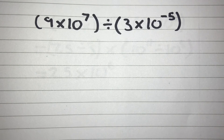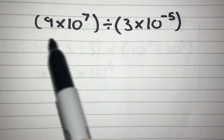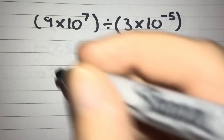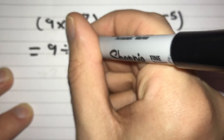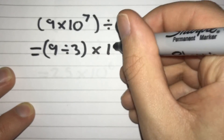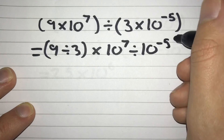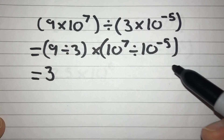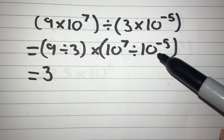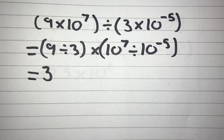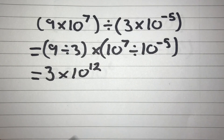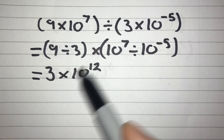Here's one more question to have a go at — pause the video and try: 9 times 10 to the power of 7 divided by 3 times 10 to the power of negative 5. Let's put our 9 and 3 out the front: 9 divided by 3 multiplied by 10 to the power of 7 divided by 10 to the power of negative 5. 9 divided by 3 gives us 3, and then 7 minus negative 5 means we're actually doing 7 add 5, giving us 10 to the power of 12. So our answer is 3 times 10 to the power of 12. We've got our number between 1 and 10 and our power of 10, so we leave it as that.